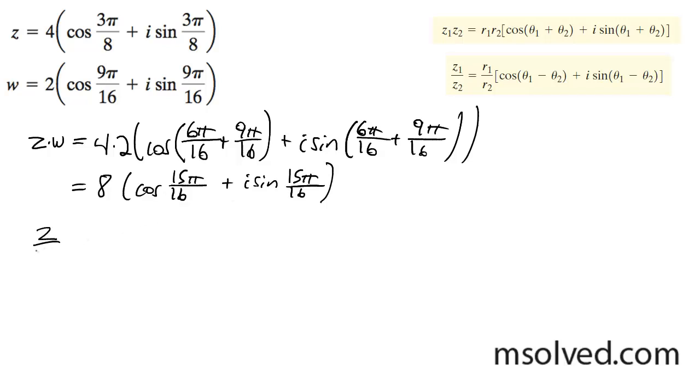And for the division of the two, we get 4 divided by 2. So cosine of 6 pi over 16 minus 9 pi over 16, this ends up becoming 2.